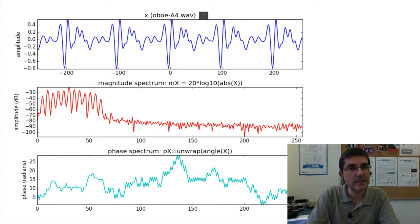So this is the oboe sound, and the spectrum, we can see the magnitude and the phase, and in the magnitude, we can identify the harmonics of these sounds. So, these peaks that we see, basically, reflect the harmonics of this oboe sound, which is clearly a very harmonic sound.